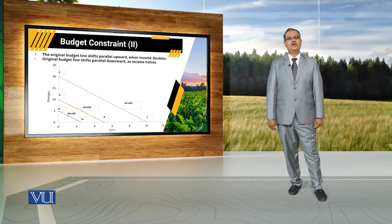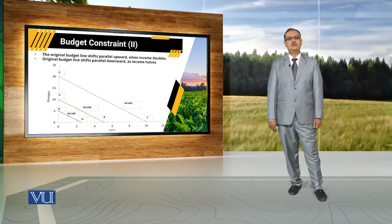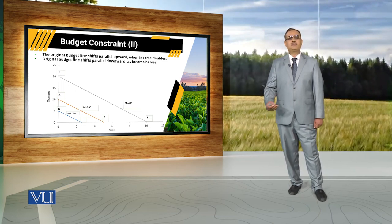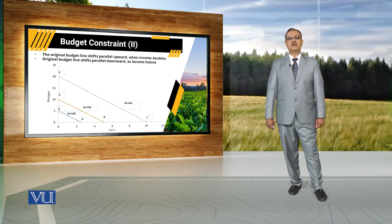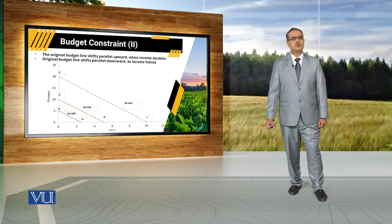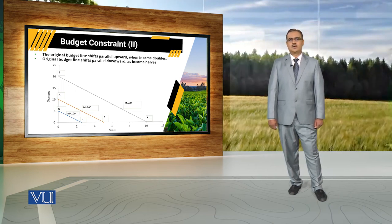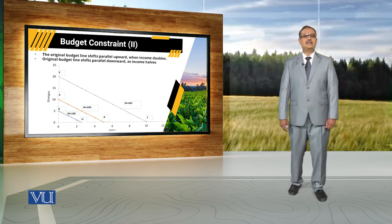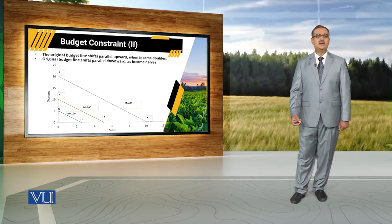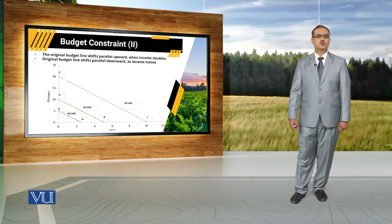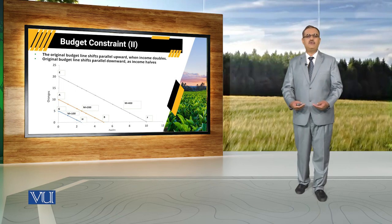Similarly, if we assume there is a proportionate increase in the prices of both commodities, the budget line will shift downward when income remains constant. Initially the budget line is AB, with price of apples equal to 40, price of oranges equal to 20, and income equal to 200. But if income stays constant while price of apples becomes 80 and price of oranges becomes 40, the budget line will shift downward again.